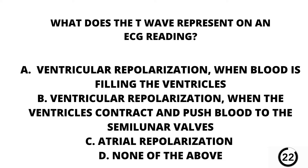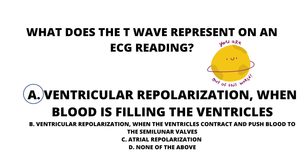What does the T wave represent on an EKG reading? A. Ventricular repolarization when blood is filling the ventricles. B. Ventricular repolarization when the ventricles contract and push blood to the semilunar valves. C. Atrial repolarization. Or D. None of the above. Our answer here is A. Ventricular repolarization when blood is filling the ventricles.